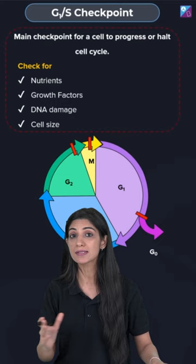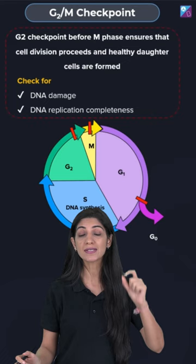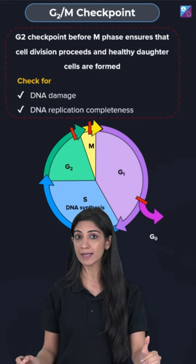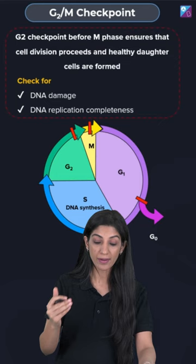It is one of the major checkpoints. The second checkpoint happens after the G2 phase of interphase before the cell progresses into the M phase of the cell cycle. This checkpoint checks for any DNA damage or even DNA replication, whether it is completed or not.